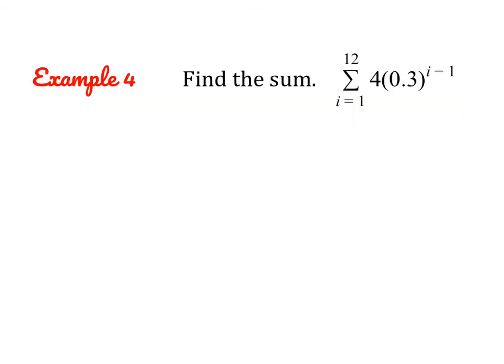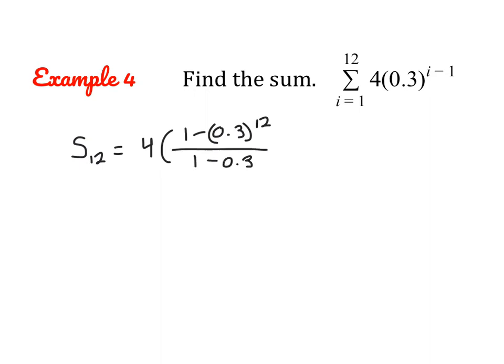Let's give this first one a try. We can clearly see that this is a geometric sequence — I can see a sub 1 and r right here. All we have to do is plug into our formula. So the sum of the first 12 terms is a sub 1, which is 4, times 1 minus r, which is 0.3, to the power of 12, which is our n value, over 1 minus 0.3.